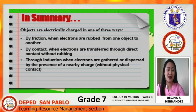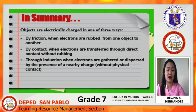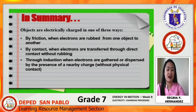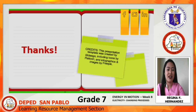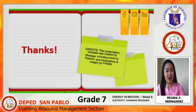In summary, objects are electrically charged in one of three ways: by friction, when electrons are rubbed from one object to another; by contact, when electrons are transferred through direct contact without rubbing; and through induction, when electrons are gathered or dispersed by the presence of a nearby charge. That is our lesson for today. Thank you for listening and I hope you learned something. Thank you and God bless everyone.